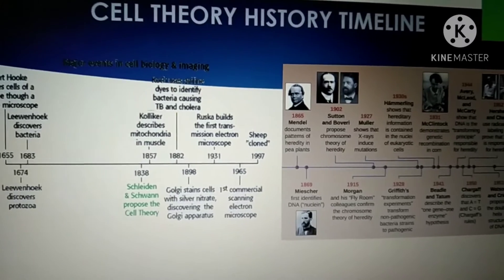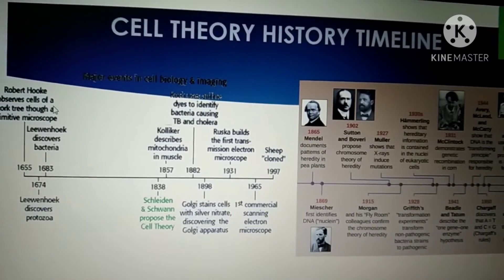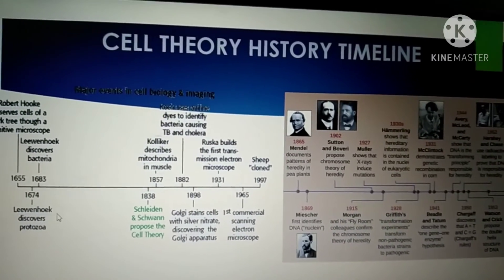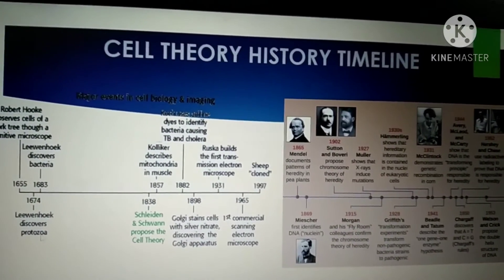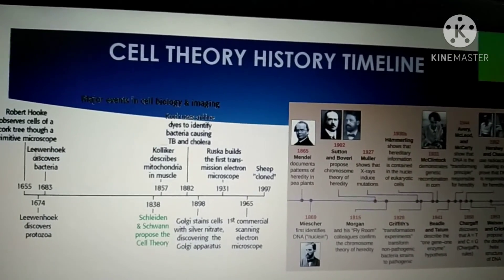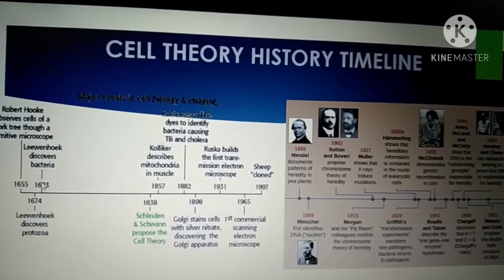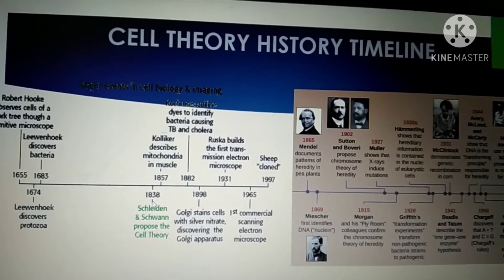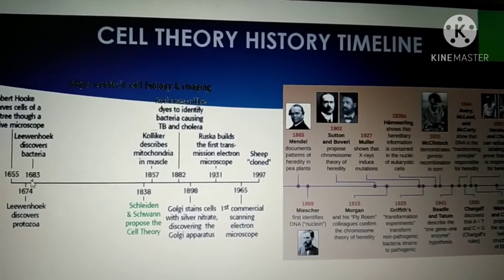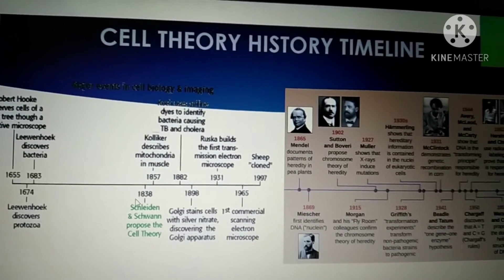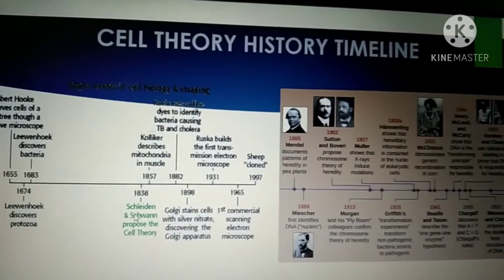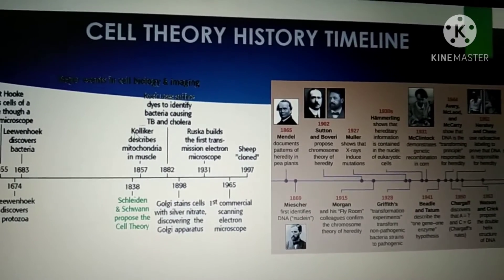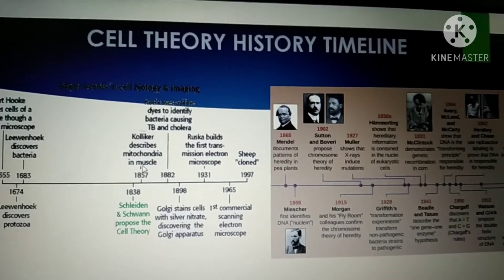In 1665, Robert Hooke first discovered the cell by observing cork tissue through a primitive microscope. In 1674, Leeuwenhoek discovered protozoa and other living organisms. In 1683, Leeuwenhoek discovered bacteria. In 1838–1839, Schleiden and Schwann proposed the cell theory. In 1857, Kolliker described mitochondria in muscle cells of myocytes.